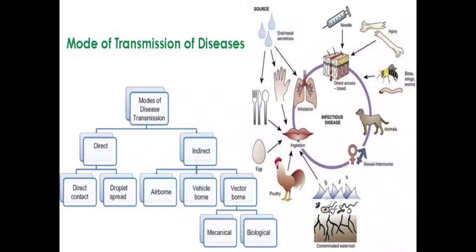There are mechanical vectors and biological vectors. Arthropods such as mosquitoes are biological vectors. For example, dengue is a viral disease transmitted through mosquitoes. These are the modes of transmission of communicable diseases.